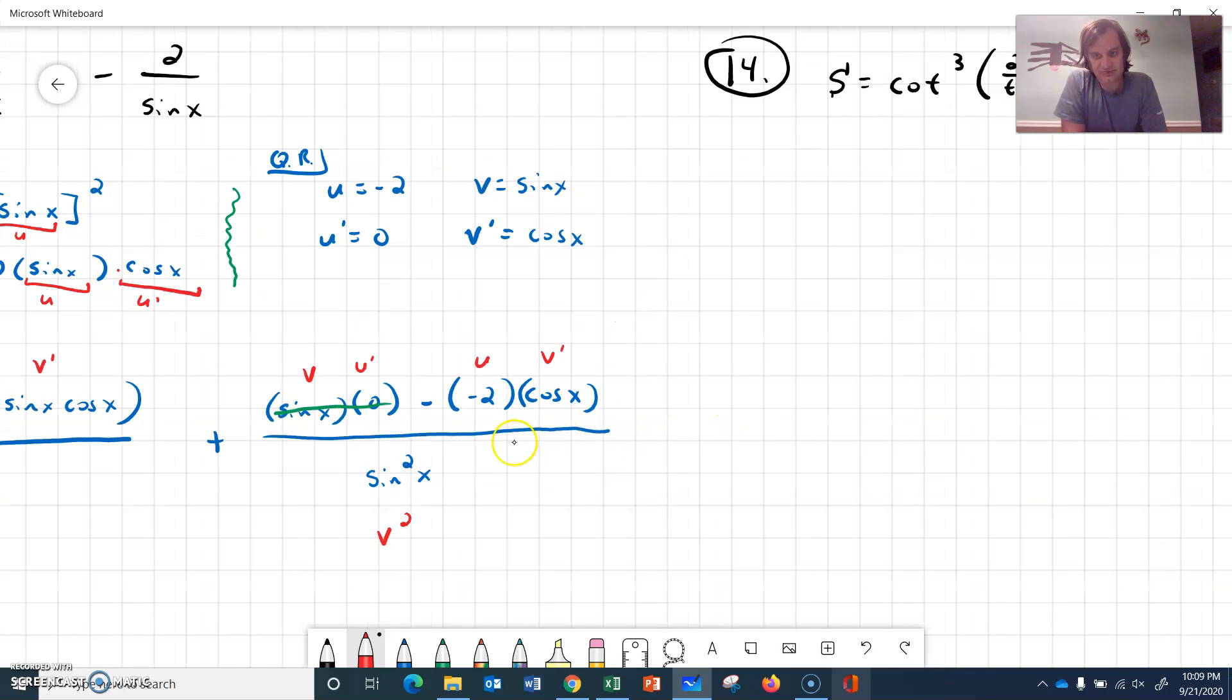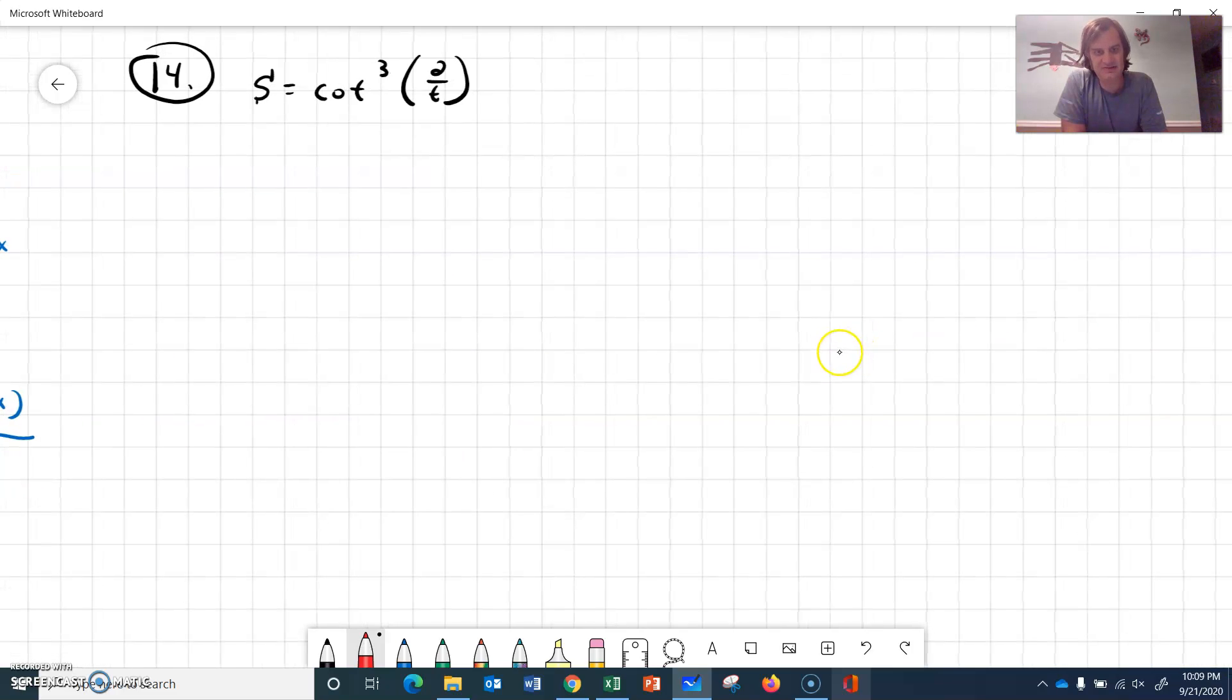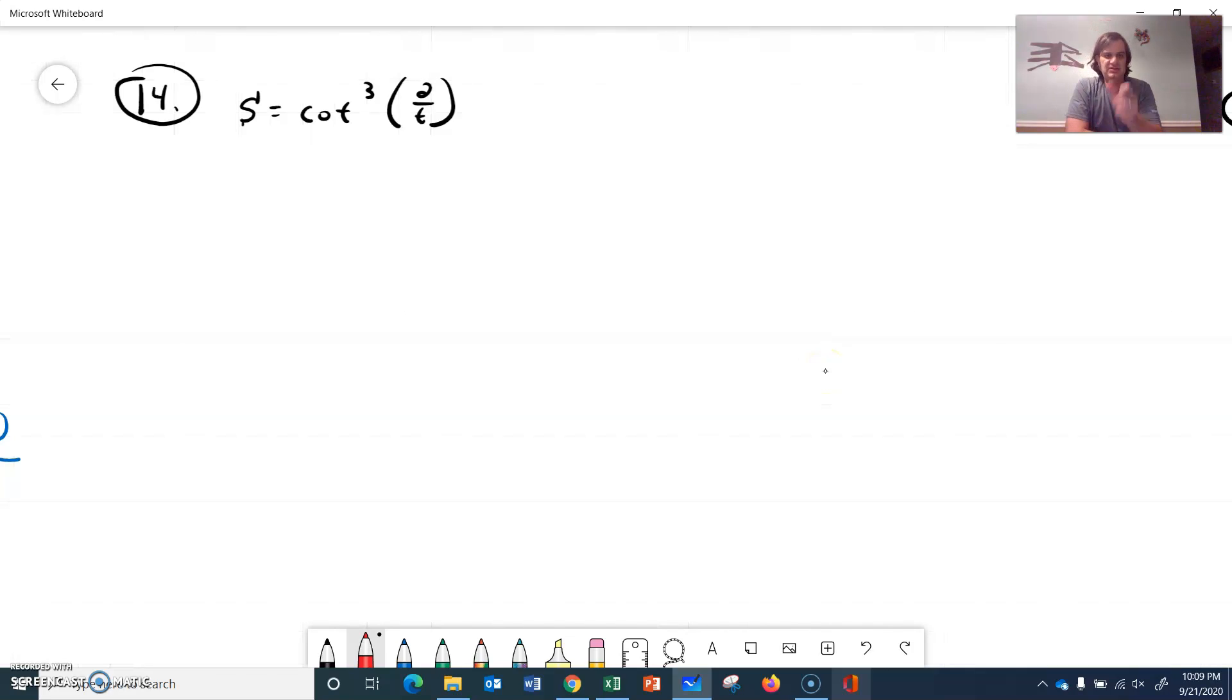So let's mark out and label. We could really clean this thing up, but I'm just going to leave it as is. v, u prime, u, v prime, and v squared. So there are probably a lot of ways with the trig functions we could really reduce that. But that is the derivative part. Okay. Let's go find 14. Here's 14.